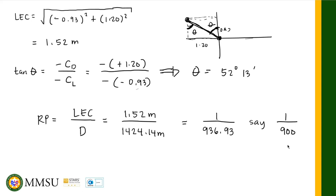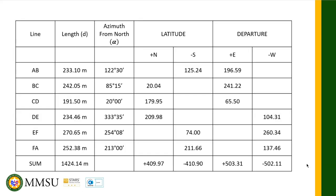This is our table showing the usual way of presenting computed values: the line, the length, the azimuth (the given data), and then the latitude and departure separated into north, south, east, and west columns. That's it for the error of closure. If you have any questions, do not hesitate to ask. I will see you in the next video.